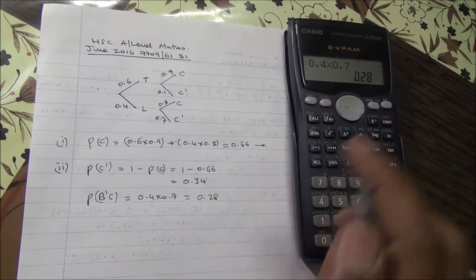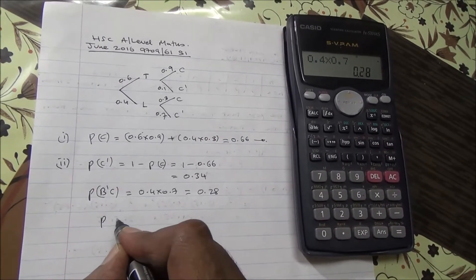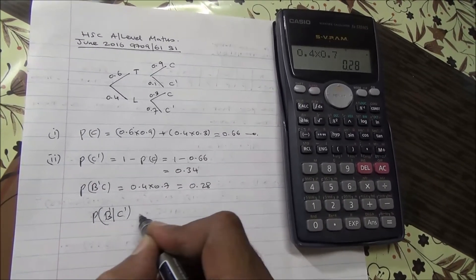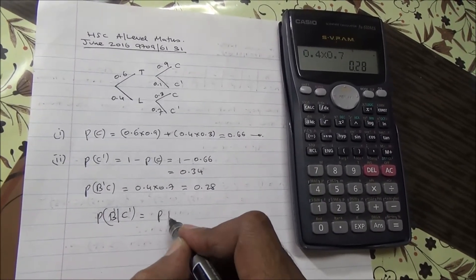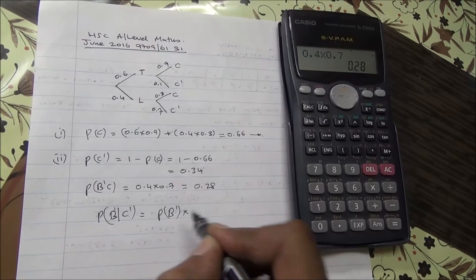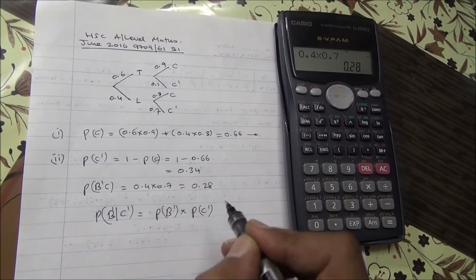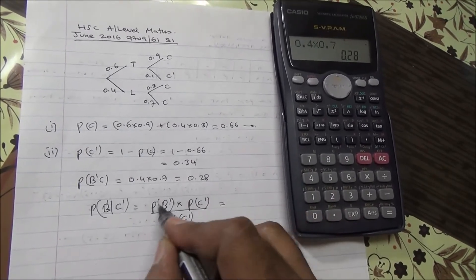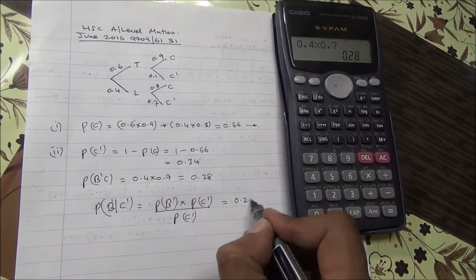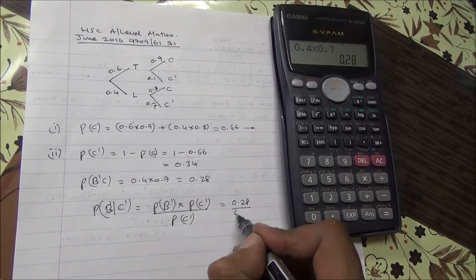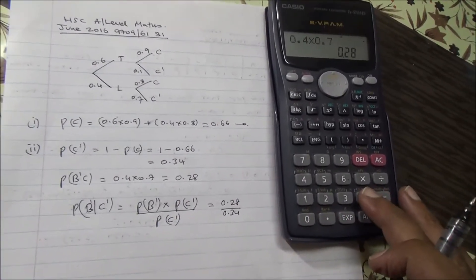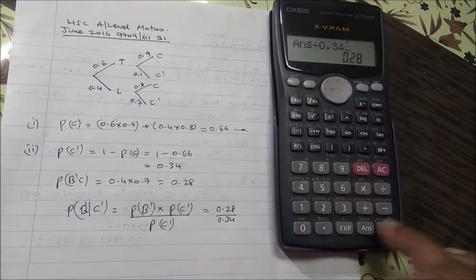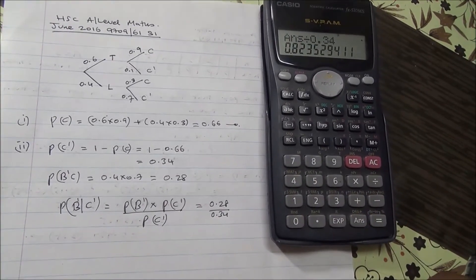Therefore, the probability that the bus is late given that he doesn't get a cup of coffee is: the probability that the bus is late and he doesn't get a cup of coffee, over the probability that he doesn't get a cup of coffee. So that's 0.28 divided by 0.34, which gives us 0.8235.